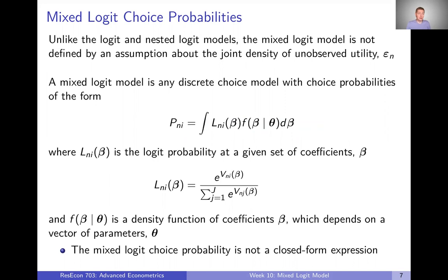In the previous models — the logit, nested logit models, for example — we started by defining an underlying distribution, making an assumption about the joint density of our unobserved utility, those epsilon terms, and then we generated choice probabilities from there. In this case, we're actually going to do the opposite, because a mixed logit model is actually going to be any discrete choice model with choice probabilities of a specific form. So instead of defining our model by our assumptions about the unobserved utility and using that to get choice probabilities, we're actually just going to define this model based on those choice probabilities directly.